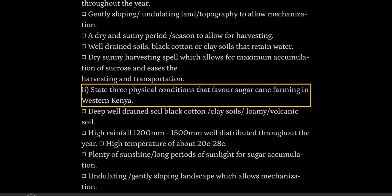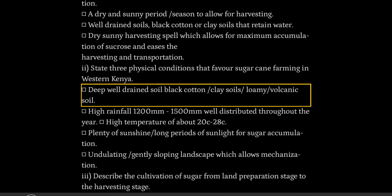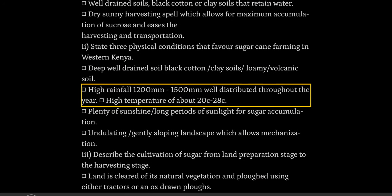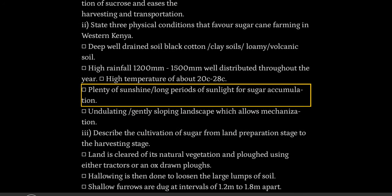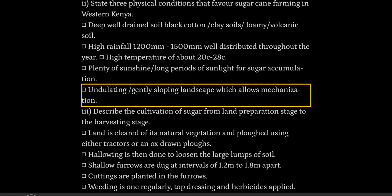State three physical conditions that favor sugarcane farming in western Kenya. Deep well-drained soil — black cotton clay soils, loamy volcanic soil. High rainfall 1200 mm to 1500 mm well distributed throughout the year. High temperature of about 20°C to 28°C. Plenty of sunshine — long periods of sunlight for sugar accumulation. Undulating gently sloping landscape which allows mechanization.